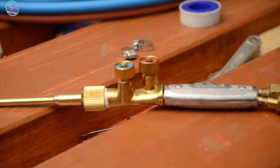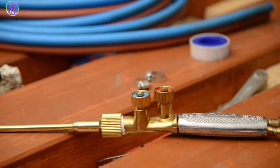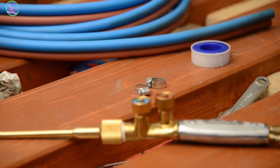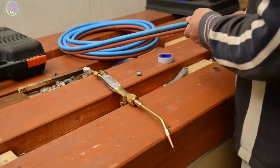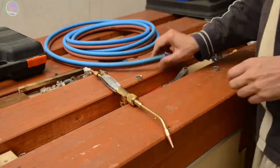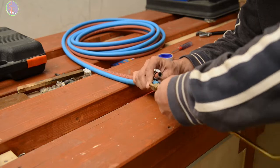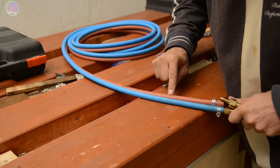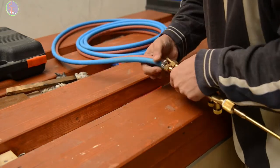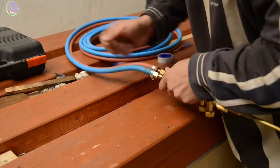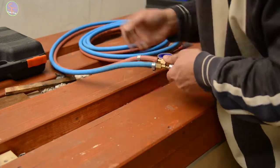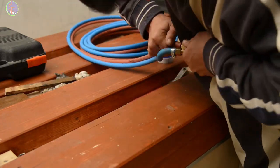Like other oxy-acetylene torches, you have two lines. In this torch we have blue for oxygen and red for the fuel. So I am not using acetylene as I told you, so I'm mimicking the acetylene with some other gas.